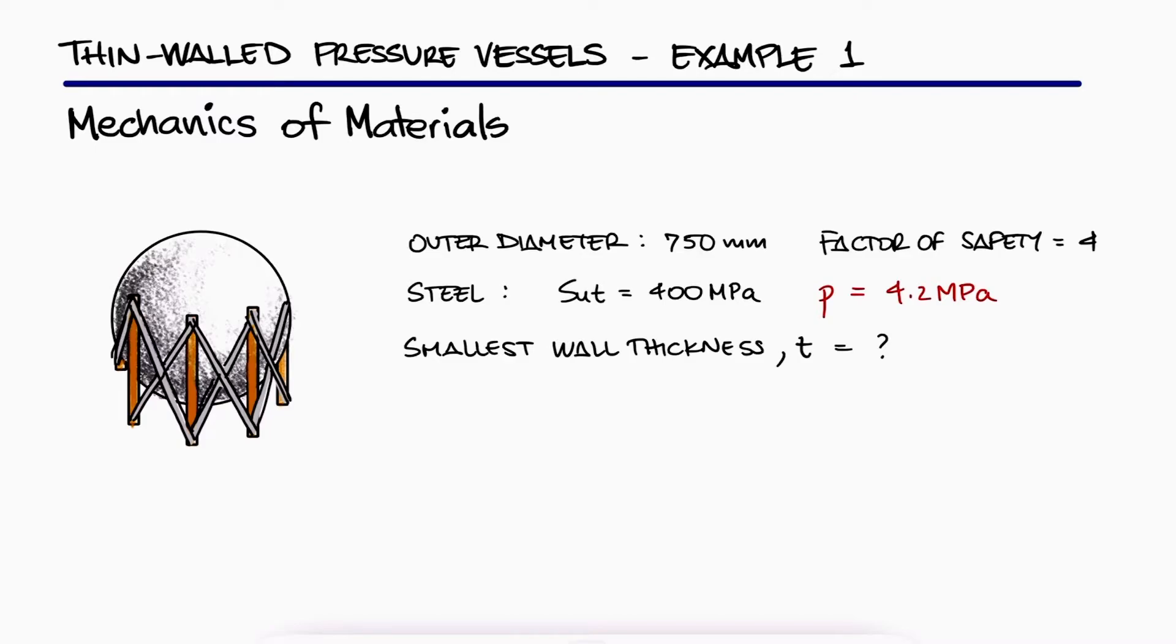We know that the maximum normal stress within a spherical pressure vessel will be given by PR over 2t, meaning it depends on the thickness of the wall. If the factor of safety is defined as the ultimate strength over that maximum stress, we can substitute that expression to find an equation to solve for t.